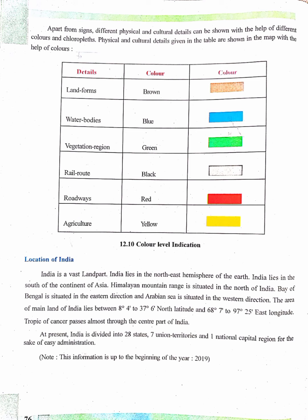Let's observe the table. To indicate the landforms, brown color is used. For water bodies, blue color is used. For showing the vegetation region, green color is used. To indicate the rail route, black color is used. To show the roadways, red color is used. And to show the places where agriculture is done, yellow color is used.